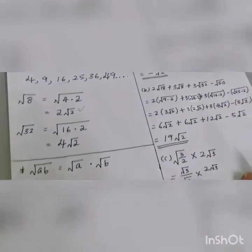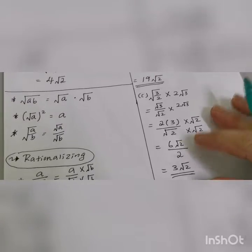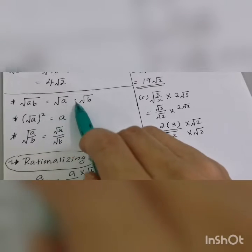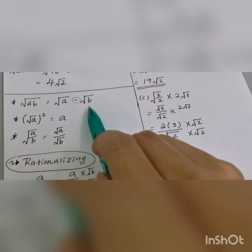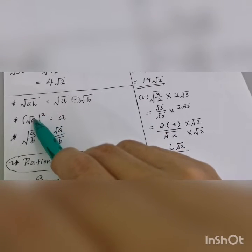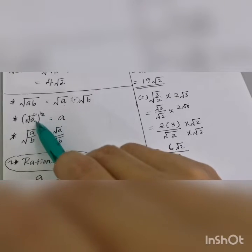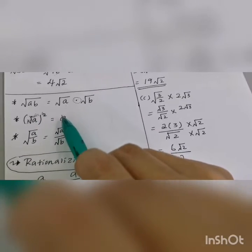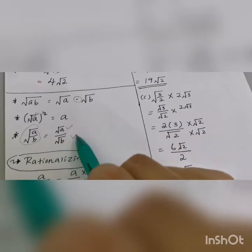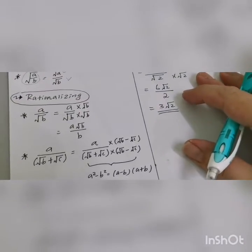This subtopic you already know from junior level. For example, square root of ab, we can write it as square root of a times square root of b. When a square and square root meet together, they cancel, so the answer becomes a only. And for division, we can separate it similarly. This process is called rationalizing.